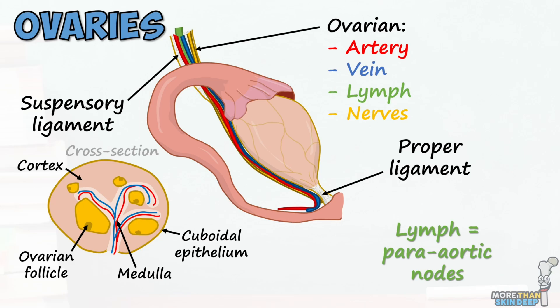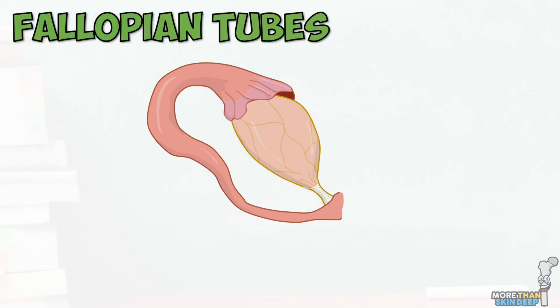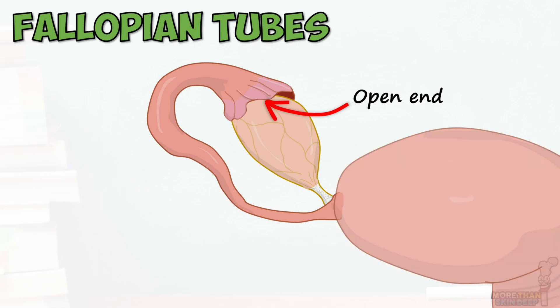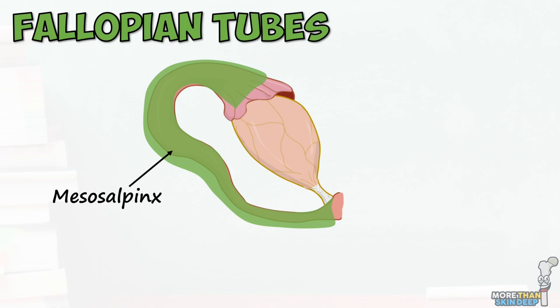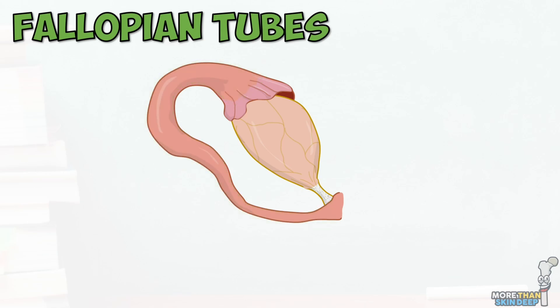Next we have the fallopian tubes, sometimes referred to as the oviducts. These 12cm long tubes have an open end near the ovary, which is used to catch the egg as it's released, and an end which connects directly to the uterine cavity. The fallopian tubes act as a passageway for the egg to reach the uterus from the ovary. Like the ovaries, the fallopian tubes are surrounded by a sheet of peritoneum, this time known as the mesosalpinx. Unlike the ovaries, there are no additional dedicated ligaments holding these tubes in place.